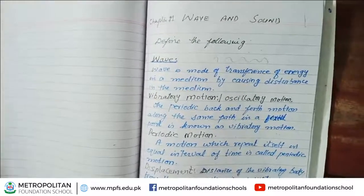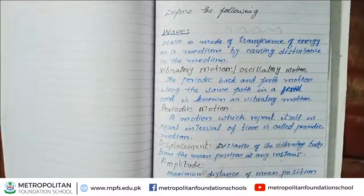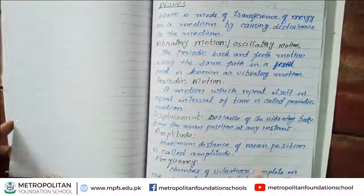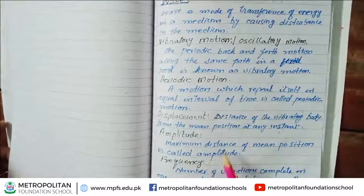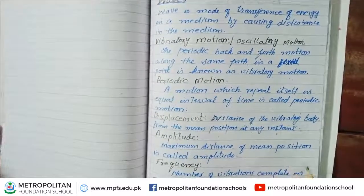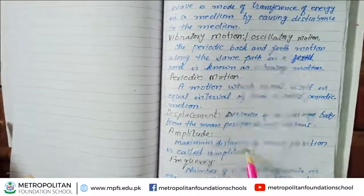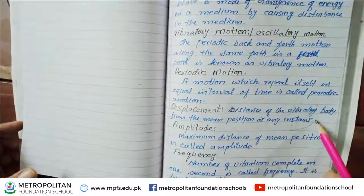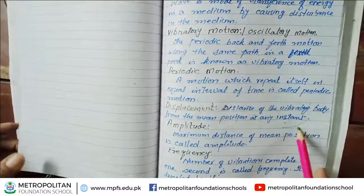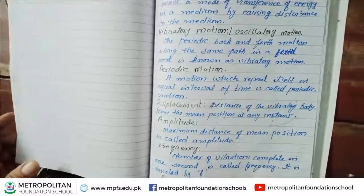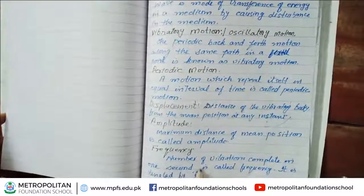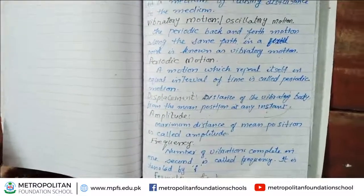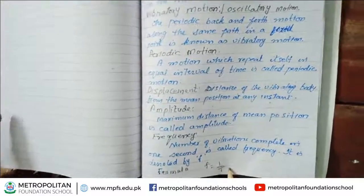Displacement is the distance from the mean position to either extreme. We call this displacement amplitude. The maximum distance from the mean position is called amplitude — that is, the distance to the extreme. Frequency is the number of vibrations completed in one second, denoted by f. The formula is f = 1/T.